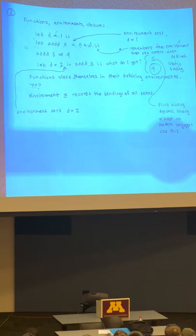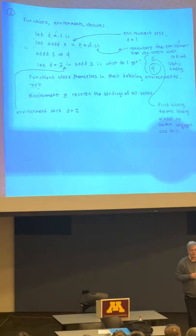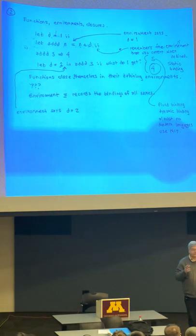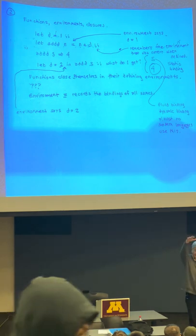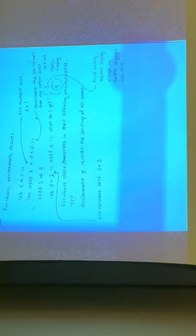How is dynamic binding easier to implement? To do dynamic binding, you search the stack when you see an inherited variable — you find the first definition on the stack and use that. For static binding, when you create a function, you have to have a data structure that remembers the environment. That's a little harder to do. Without dropping into a compiler design lecture, that's the best I can do for now.